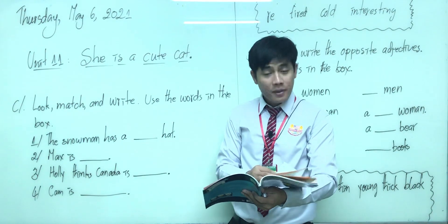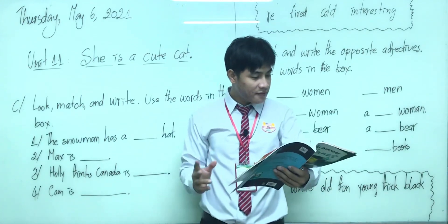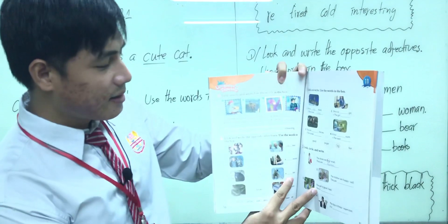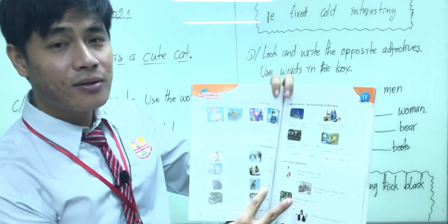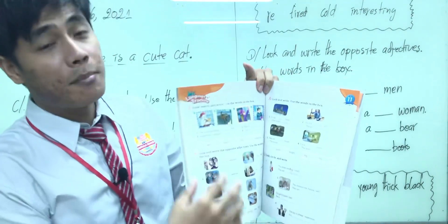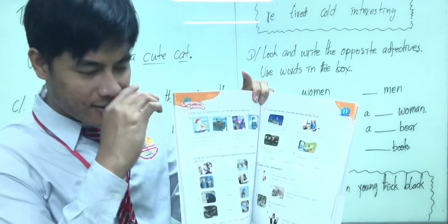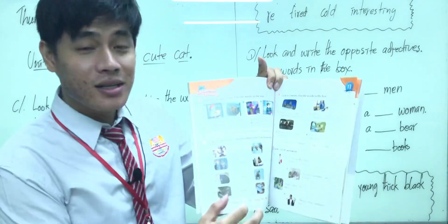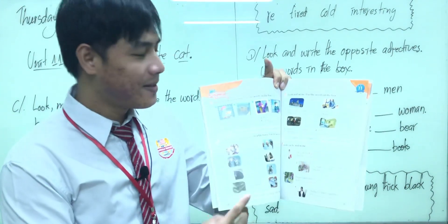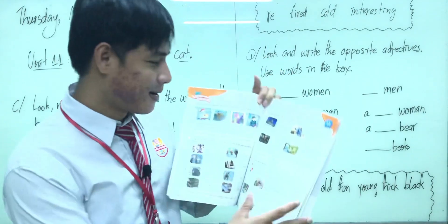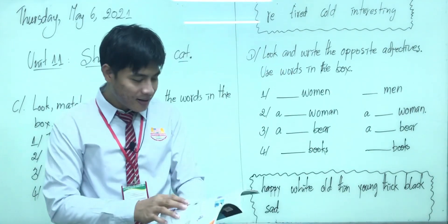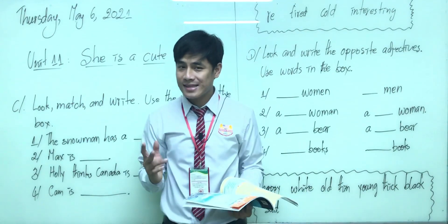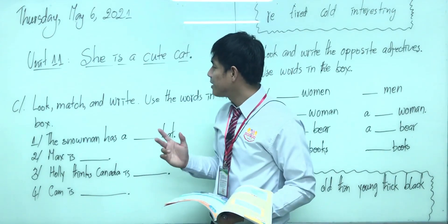Open your book to page 50. On page 50, you will see the exercise on Part C and the exercise on Part D. We're going to complete this page — we're going to finish this page by this session.